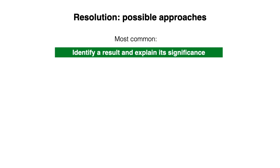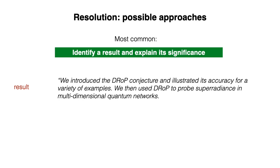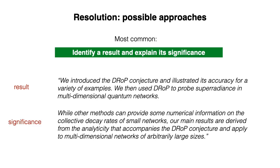When writing your resolution, there are a couple of possible approaches. The most common is to identify a result and explain its significance. For example: we introduced the drop conjecture and illustrated its accuracy for a variety of examples. We then used drop to probe superradiance in multidimensional quantum networks. While other methods can provide some numerical information on the collective decay rates of small networks, our main results are derived from the analyticity that accompanies the drop conjecture, and apply to multidimensional networks of arbitrarily large sizes.